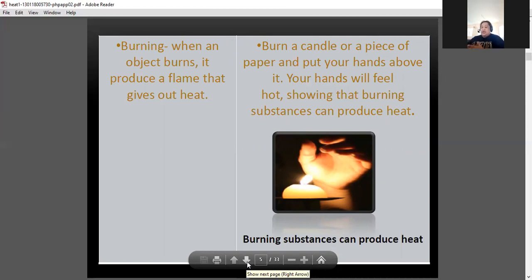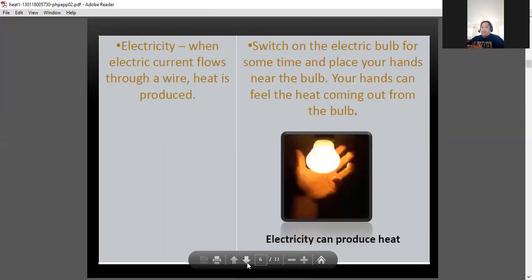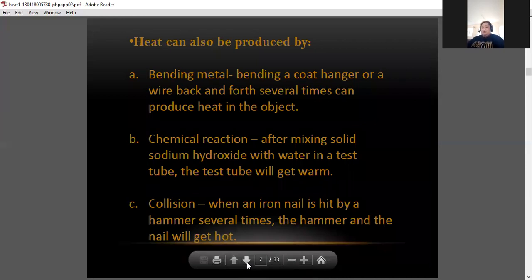Then after that, electricity. So like in this picture, you will turn on bulbs or lights so that these are your examples of producing heat. So next is, this could also be done at home. So that's three. Then after this one, there are three more. Bending of metal, chemical reaction, and collision. So just look for examples.